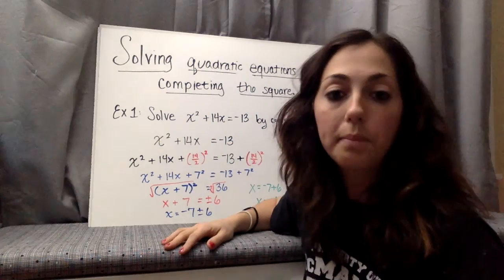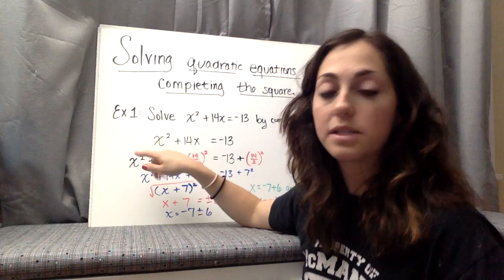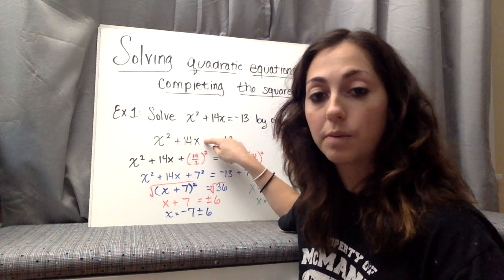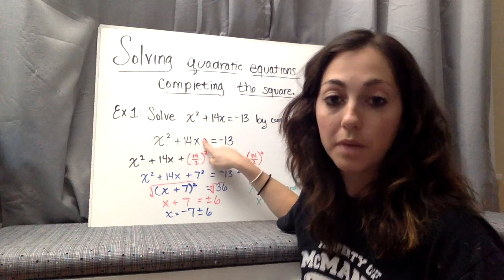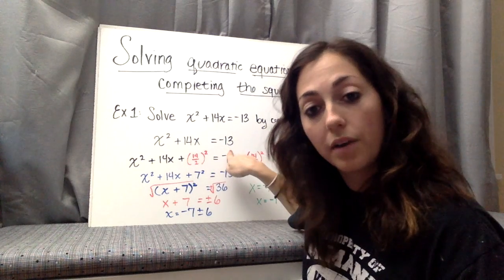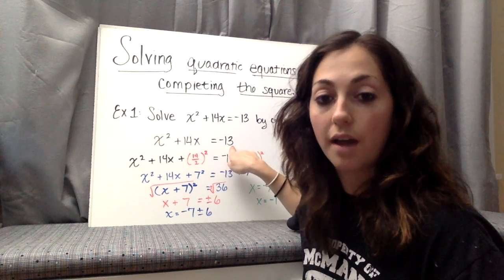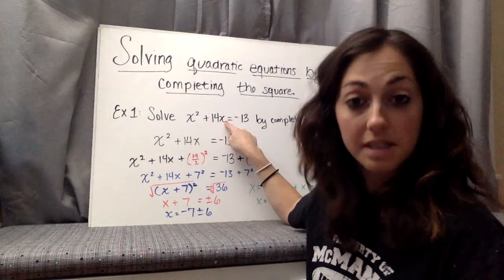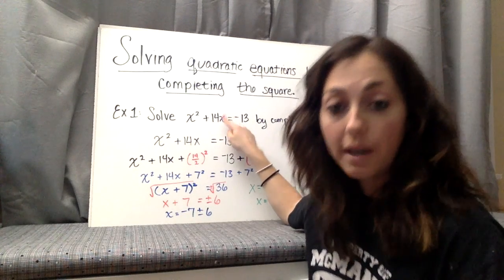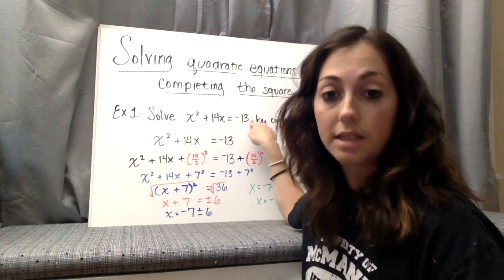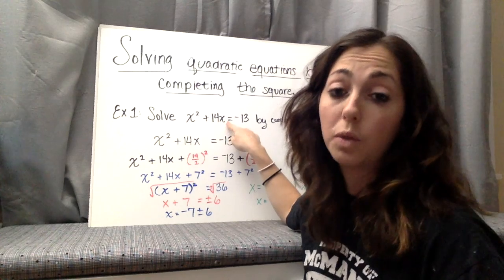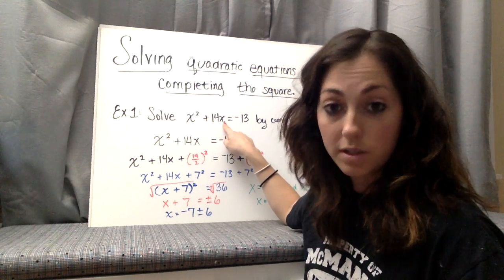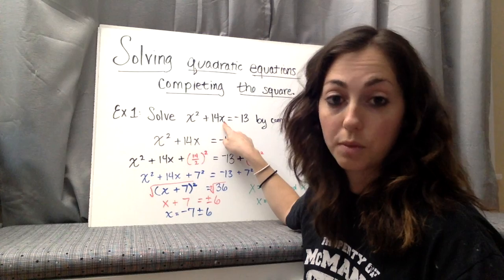If you remember completing the square, we had ax squared plus bx, and we had to figure out what our c was to make it a perfect square trinomial. That's why our negative 13 is on the other side. If we did have it on the left side, you would have to subtract it so that your c value wasn't there. We are creating our c so that it is a perfect square trinomial.